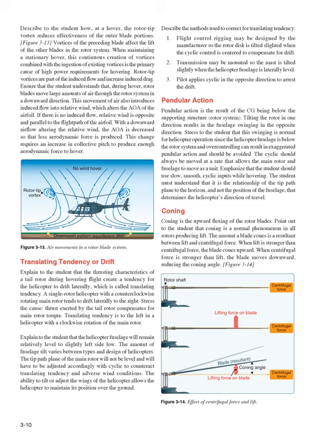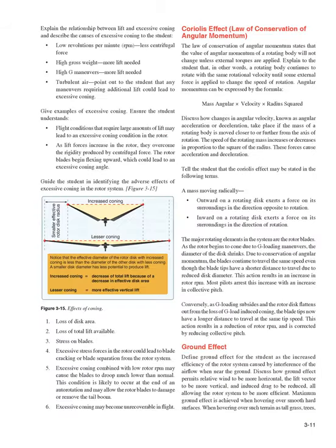Coning: coning is the upward flexing of the rotor blades. It is a normal phenomenon in all rotors producing lift — the amount of blade coning is a resultant between lift and centrifugal force. When lift is stronger than centrifugal force, the blade cones upward; when centrifugal force is stronger, the blade moves downward, reducing the coning angle. Causes of excessive coning include: low RPM (less centrifugal force), high gross weight (more lift needed), high-G maneuvers (more lift needed), and turbulent air. Flight conditions requiring large amounts of lift may lead to an excessive coning condition. As lift forces increase in the rotor, they overcome the rigidity produced by centrifugal force and the rotor blades begin flexing upward.